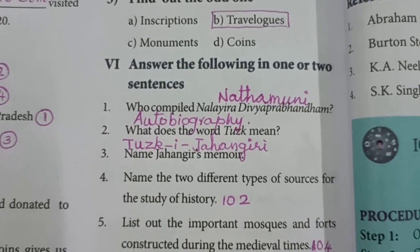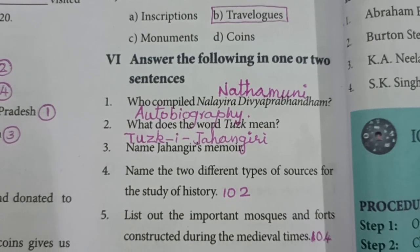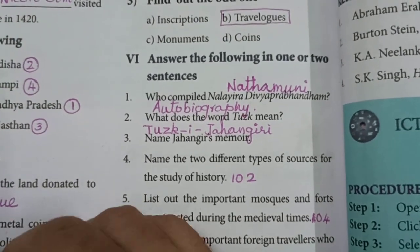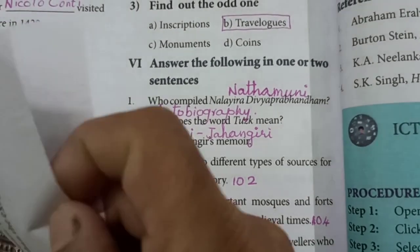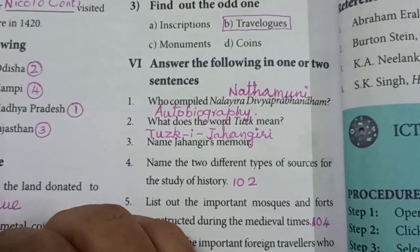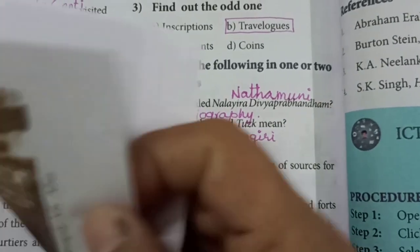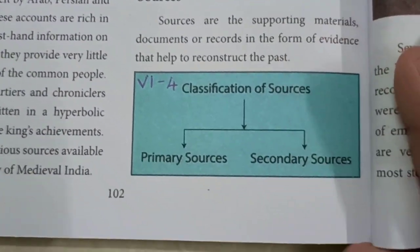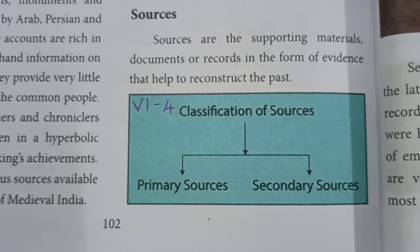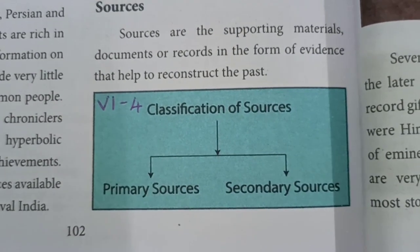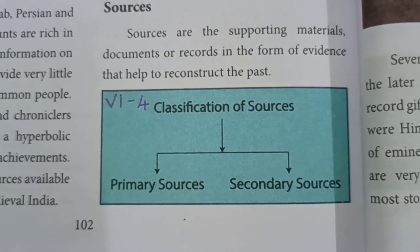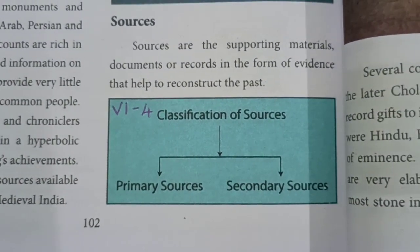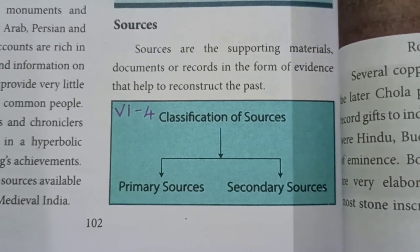Name the two different types of sources for the study of history. The answer is on page number 102 — see the box labeled Classification of Sources. The two sources are primary sources and secondary sources.